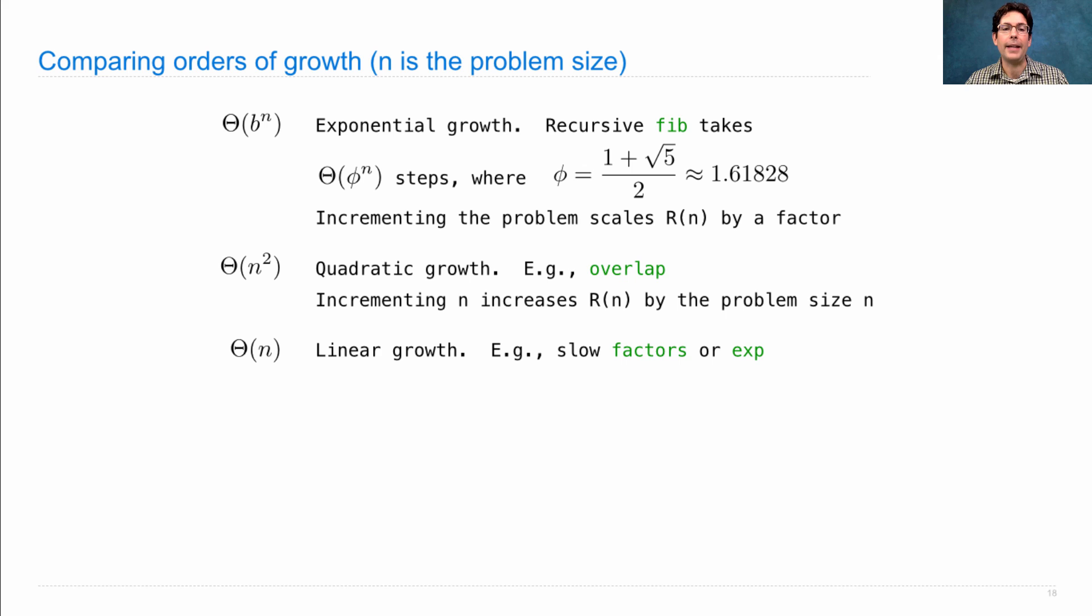Theta n is linear growth. So we saw that implementations of exp and factors that we developed in this lecture, the slow versions anyway, required linear growth. So the size of the input dictated how many steps there were.